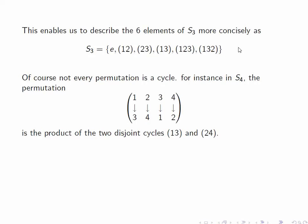Notice that not every element is a cycle. For instance, in S4, the permutation here is the product of 2 disjoint cycles, (13) and (24). So it flips 1 and 3, and it flips 2 and 4.